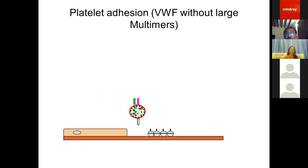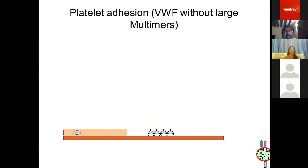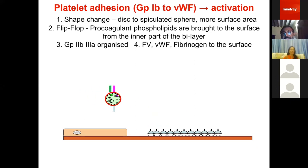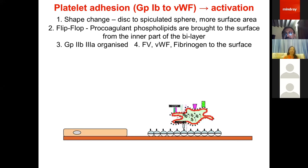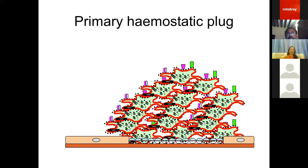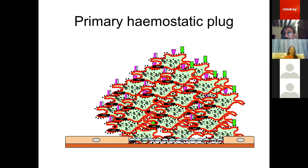In type 2A von Willebrand's disease, absence of high-molecular-weight multimers means the von Willebrand factor is not long enough for platelets to develop sufficient resistance to flow, so they are swept away and bleeding continues. The primary hemostatic plug is unstable and requires stability in the form of fibrinogen being converted to fibrin.